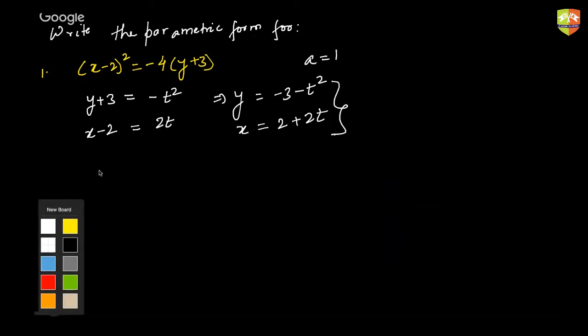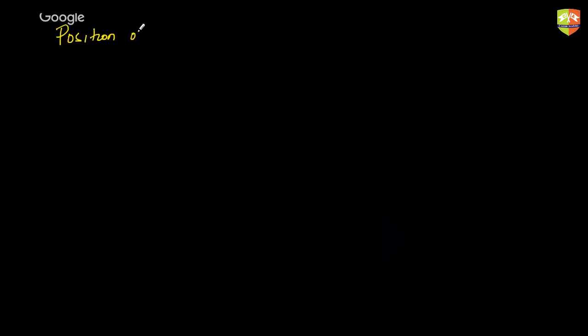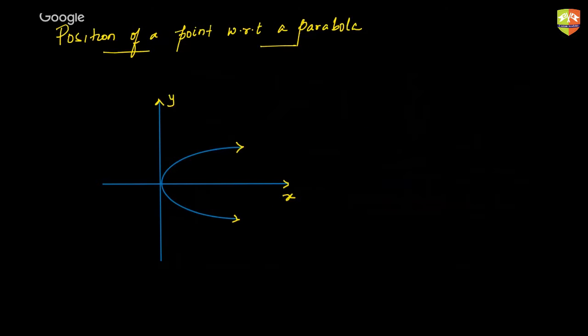Now we are going to move on to the next concept: position of a point with respect to a parabola. A point (x₁, y₁) can lie at three positions with respect to a parabola — it can lie inside the arms of the parabola (position a), on the parabola (position b), or outside the parabola (position c).